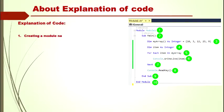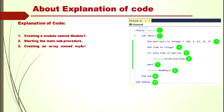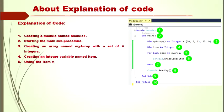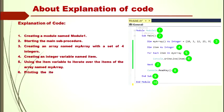Explanation of the code: First, creating a module named Module1. Second, starting the Main Sub procedure. Next, creating an array named myArray with a set of integers. Next, creating an integer variable named item. Using the item variable to iterate over the items of the array named myArray. Next, printing the items found in the array by the above statements on the console.